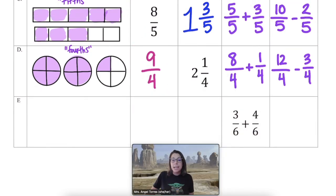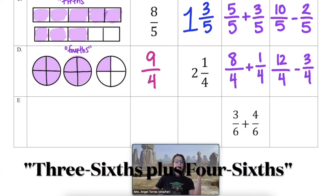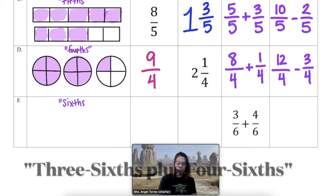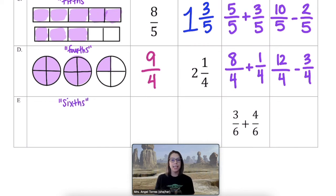Last in the table is diagram E. We have three sixths plus four sixths. So no matter what, we need to create a diagram, an improper fraction, and a mixed number that deals with six. Six equal sized pieces. Now when you're given a sum, there's a couple things we could do with that. We could add them together to get our improper fraction and then make our diagram. Or you could just start with three sixths in a diagram and add four more and see what you get. Either way, I'm going to let you play around with this one on your own and then we'll come back together to see how you did.